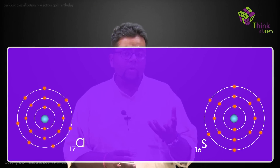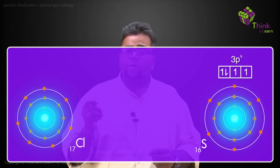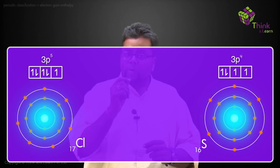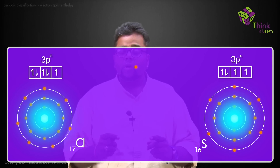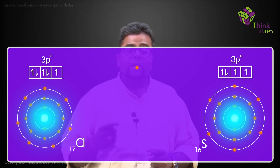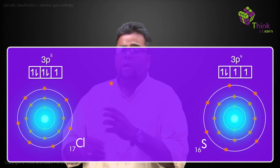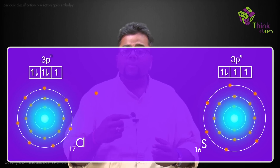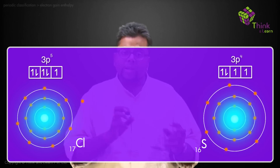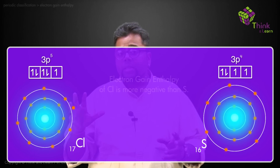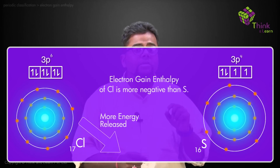Two factors on which electron gain enthalpy depends are nuclear charge and atomic size. Now let's consider two non-metals: sulfur (3p4) and chlorine (3p5). If we add one electron, chlorine would accept it first and become more stable because it achieves the noble gas configuration. So the stability for chlorine after accepting the electron increases, and it releases the maximum amount of energy. Therefore, the electron gain enthalpy of chlorine would be more negative compared to sulfur.